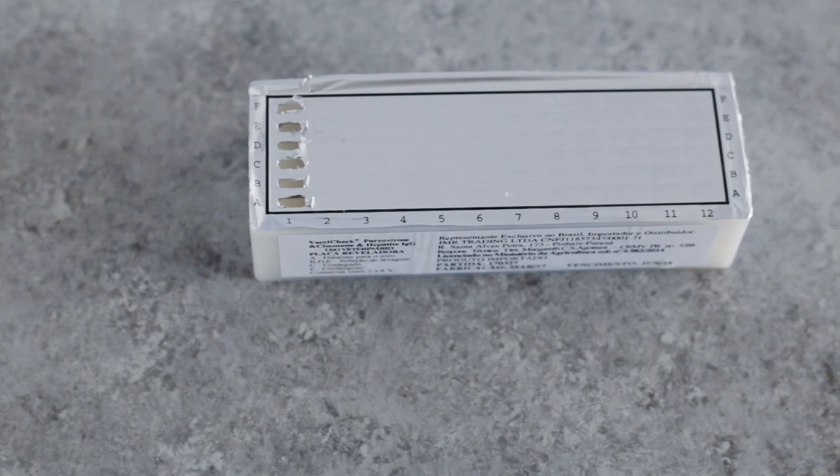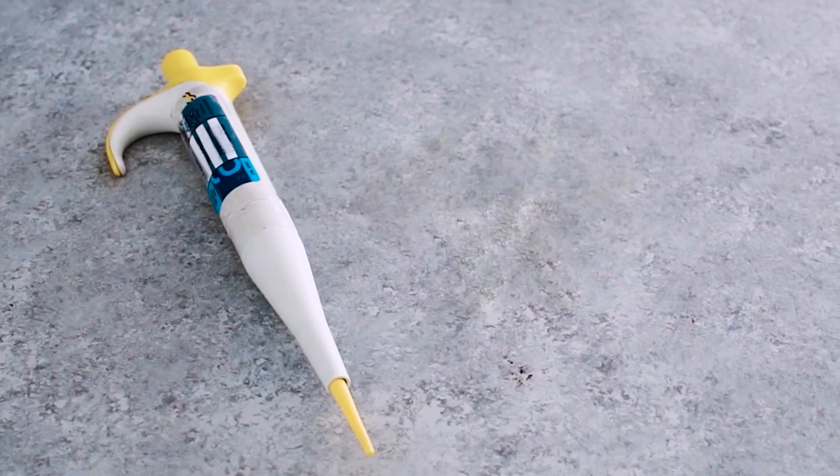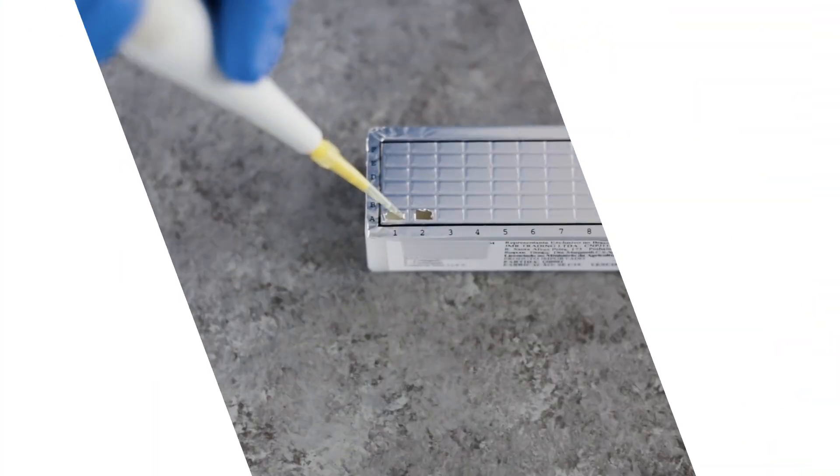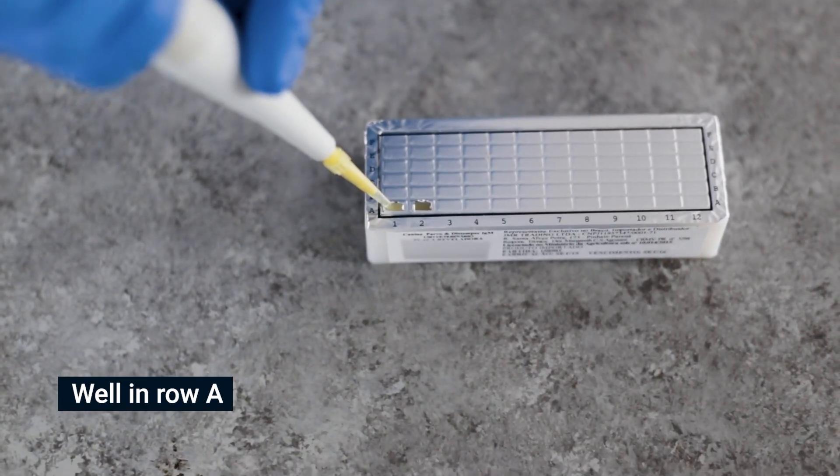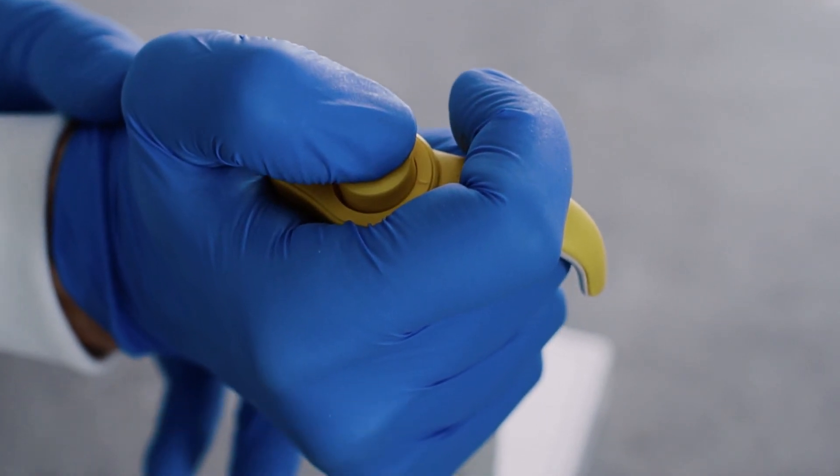For the test, use a micropipet to deposit a sample into a well in row A. Raise and lower the pipet plunger several times to mix properly, then discard the tip.